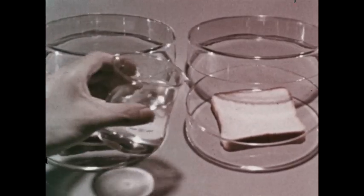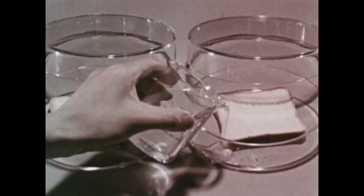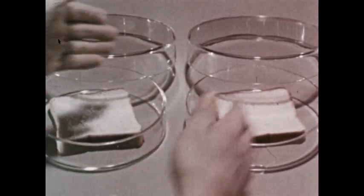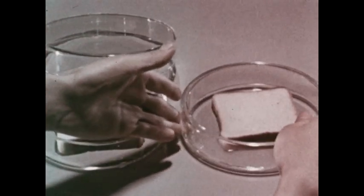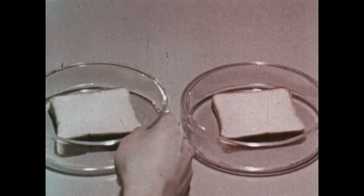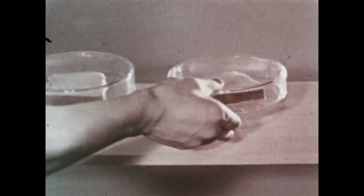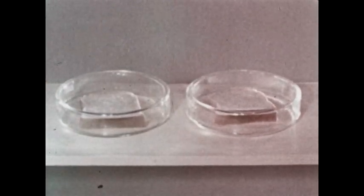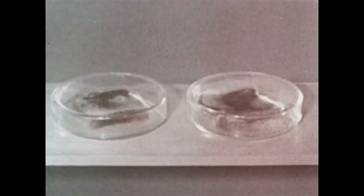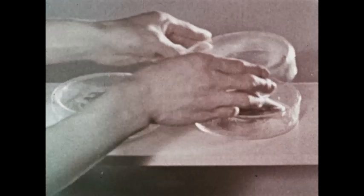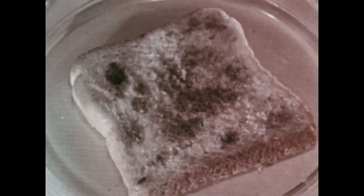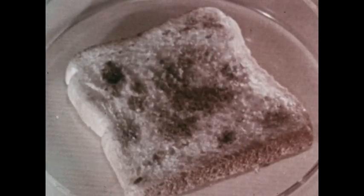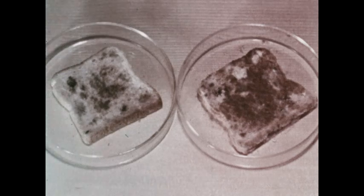A laboratory demonstration may show us if moisture has any effect on the growth of mold. Water is added to one of two slices of bread in glass dishes. The dishes are then set aside on a shelf for a few days. When we return to the bread, we see that the slice to which water was added is much more moldy than the other. Dampness seems to encourage the growth of mold.